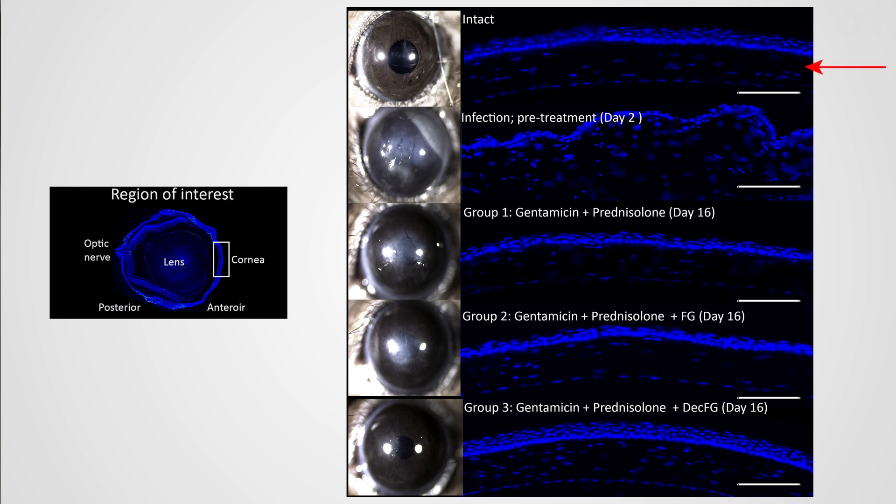This is the eye sliced through the upper axis, and then we stain the cell nuclei with a stain called DAPI. This is the intact eye, and you can see five layers of cells comprising the cornea. This is the eye after damage. This is the gold standard treatment. You can see the restoration of some of the layers, but when you actually add the Decorin at the bottom, you actually restore the original histological appearance and thickness of the cornea after a relatively short time period.